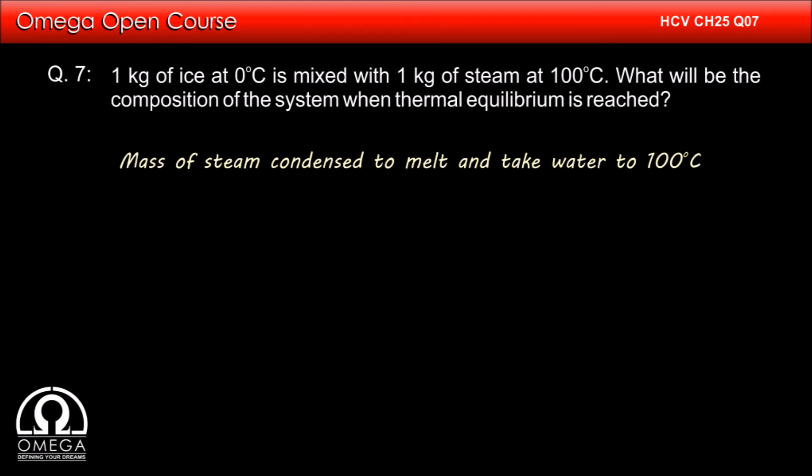To find the mass of the steam that condensed, we can simply divide the heat required to melt and heat the water by latent heat of vaporization of water. That is 7.56 into 10 to the power 5 divided by 2.26 into 10 to the power 6 which is equal to 0.335 kg or 335 grams.